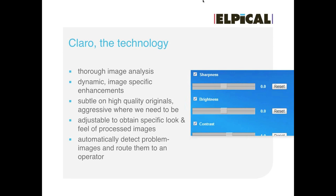The goal of Claro is to enhance images, but also to standardize quality. What we set in the configuration is the target quality we want to achieve for specific images. This means enhancement can be very subtle on already good quality images, but also much more aggressive on bad quality images. The goal is also to detect problem images and route them to an operator.